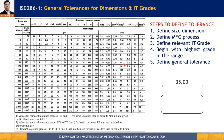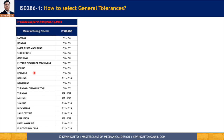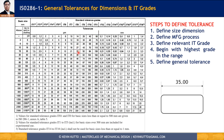Let's say the part is made by grinding instead of injection molding. Looking at the chart, grinding corresponds to IT4 to IT8, so I start with IT8 — the roughest grade in that range. For the same 35mm basic size, IT8 gives 39 microns. That is the tolerance value selected using the basic size and the manufacturing process linked to the appropriate IT grade.